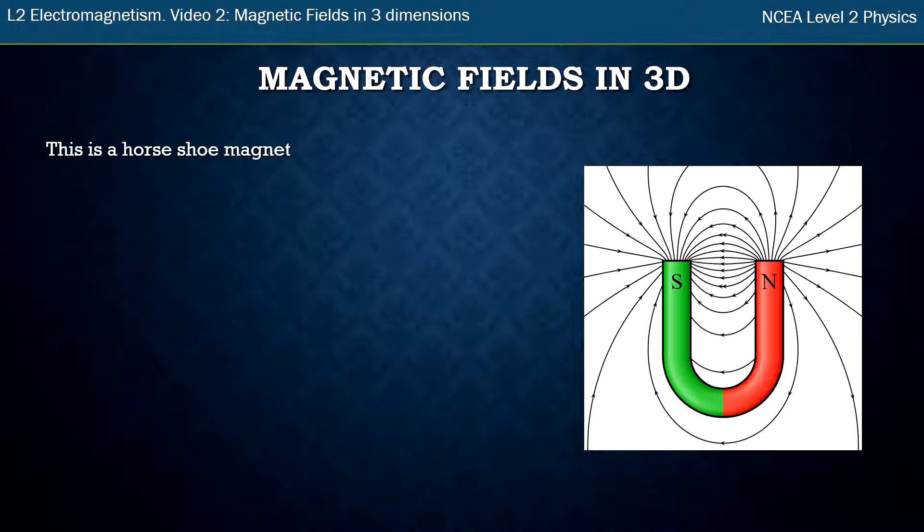Here I have a horseshoe magnet, and the cool thing about a horseshoe magnet is the little section in the middle there effectively has a uniform magnetic field all going in one direction. So often we use horseshoe magnets to create magnetic fields to do further experiments with.